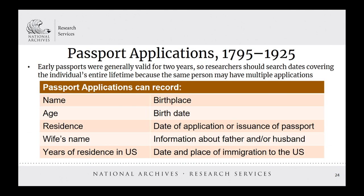Passport applications are a record set that may not cross your mind when researching immigrant ancestors, but they can be a great source of biographical data, such as birth date and birthplace, information about spouse and/or father, date and place of immigration, and so on. Early passports were generally valid for two years or less, so it's worth checking throughout an individual's entire lifetime because the same person may have had multiple passport applications.